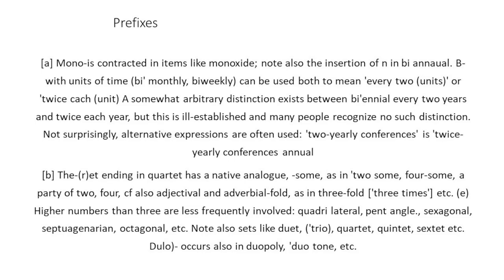'Mono-' is contracted in items like 'monoxide.' Note also that 'bi-monthly,' 'bi-weekly' can be used both to mean every two units or twice each unit. A somewhat arbitrary distinction exists between 'biannual' meaning every two years and 'biennial' meaning twice each year, but this is ill-established and many people recognize no such distinction. Alternative expressions are often used: 'two-yearly conference' or 'twice-yearly conference.'